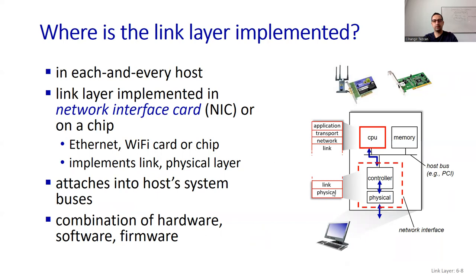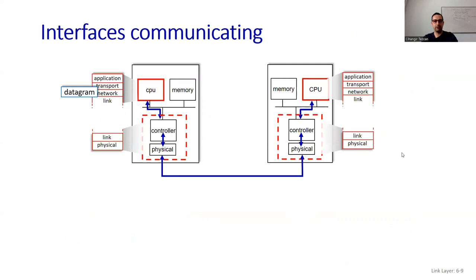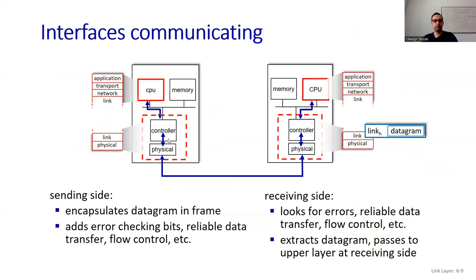At the CPU, we have all these layers, but at the link layer we send to the network adapter, which passes it to the physical layer and so on. The interfaces communicate as follows: we start with a datagram, the link layer specifies the destination using MAC addresses. The sending side encapsulates the datagram in a frame, adds error-checking bits, handles reliable data transfer and flow control. The receiving side looks for errors, handles reliable data transfer and flow control, extracts the datagram, and passes it up to the upper layer.